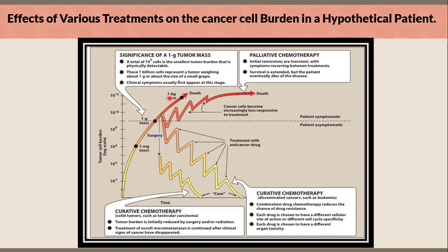From this stage, if the disease progresses to reach a one gram tumor mass, the patient may die. There are two pivotal pathways: curative and palliative chemotherapy. For curative chemotherapy of solid tumors such as testicular carcinoma, the tumor burden is initially reduced by surgery and/or radiation down to the one milligram mass, followed by treatment of occult micrometastases, which continues after clinical signs of cancer have disappeared.